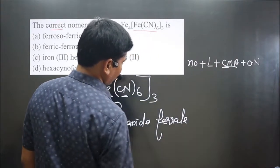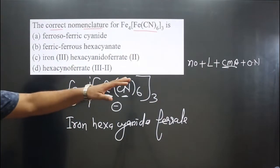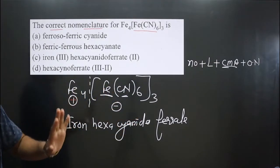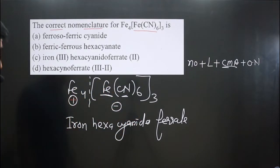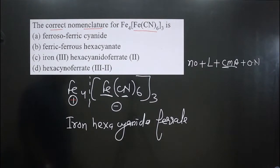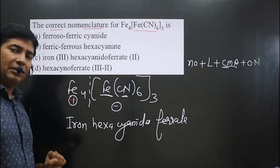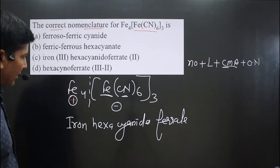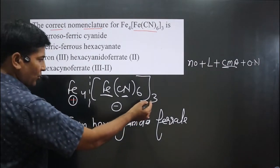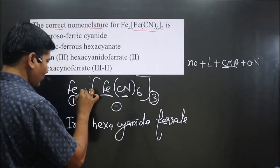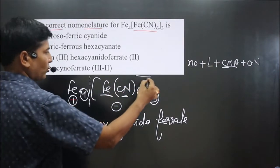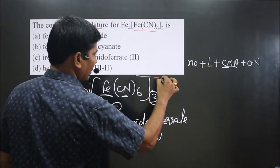We have the central metal atom, and then we need the oxidation number of the central metal atom in Roman numerals. To calculate the oxidation number, we use the crisscross method. Three is here and four is here, so we crisscross — the four will go to the top. The second part is negative and the first part is always positive.